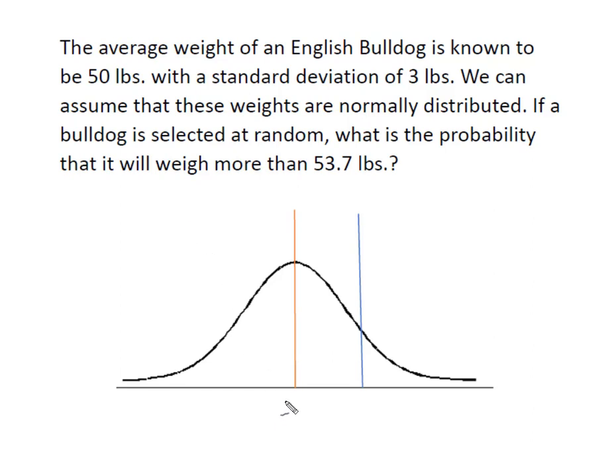So we have our normal curve and we have the mean is equal to 50 pounds. And so here we have our value of X is equal to 53.7 pounds. And we want to know what's the probability that they will weigh more than 53.7 pounds.